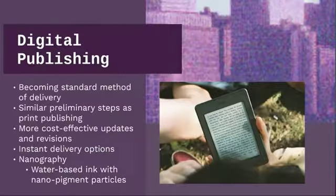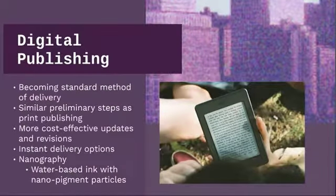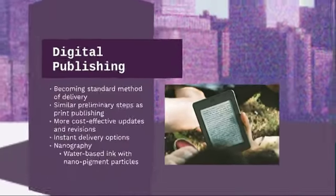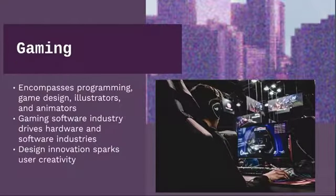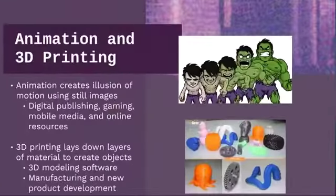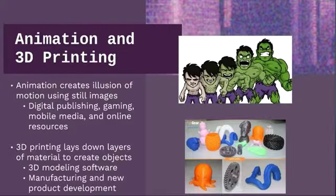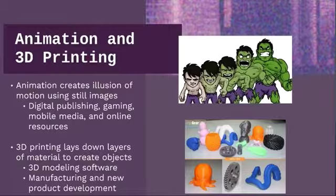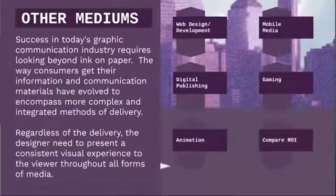Digital publishing has become a standard method of delivery, similar in preliminary steps to print publishing, but more cost-effective — you can update it, add revisions, and it gives instant delivery options. Another type of printing is nanography, which uses water-based ink with nanopigment particles. Gaming encompasses programming, game design, illustration, and animation — the gaming software industry drives hardware and software industries, and design innovates creativity. Animation creates the illusion of motion using still images and can be used in digital publishing, gaming, mobile media, and online resources. 3D printing lays down layers of material to create objects, usually using 3D modeling software, allowing you to see new possibilities in manufacturing and product development — giving you something tangible and hands-on.